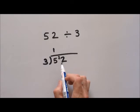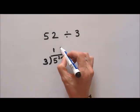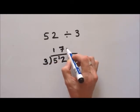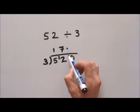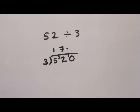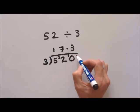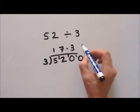How many threes can we get out of twenty-two? Five times three is fifteen, six times three is eighteen, seven times three is twenty-one — so seven. Now we've run out of numbers, so we put a zero here and a decimal point. The remainder is one. How many threes can we get out of ten? Three threes are nine, so three with a remainder of one.